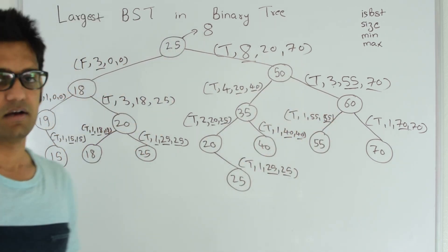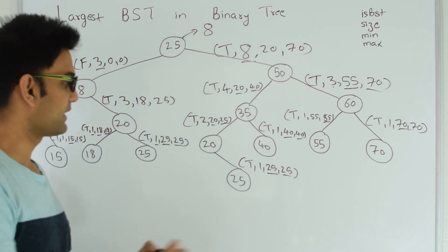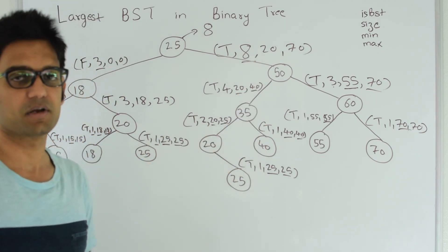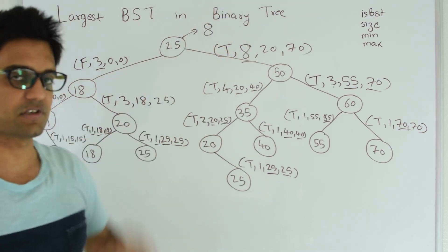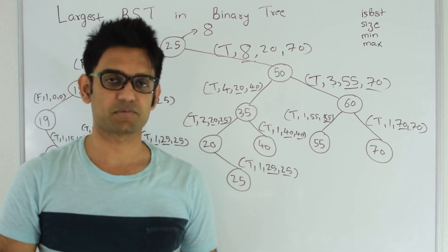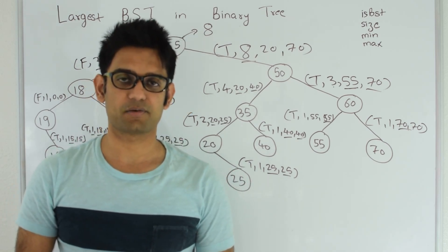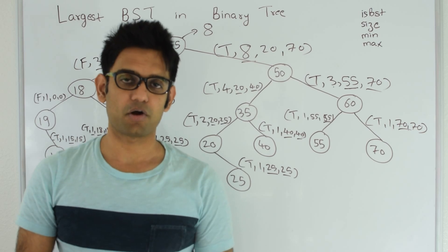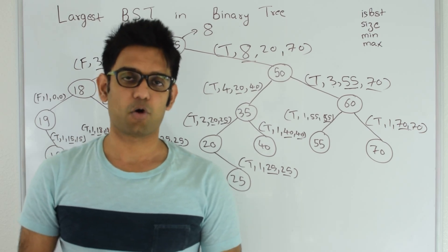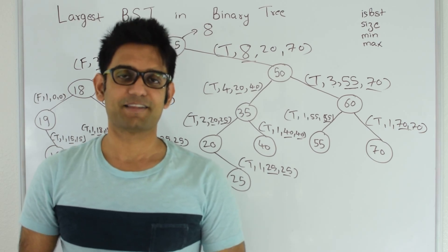The runtime complexity for this algorithm is O(n). All we did is a post-order traversal going from bottom to top, propagating information up to the root, and then the root returns the maximum size subtree. The link to the code is in the description. Please help improve my GitHub repository at github.com/mission-peace/interview-wiki, and subscribe to my YouTube channel at youtube.com/user/tusharoy2525. Thanks for watching.